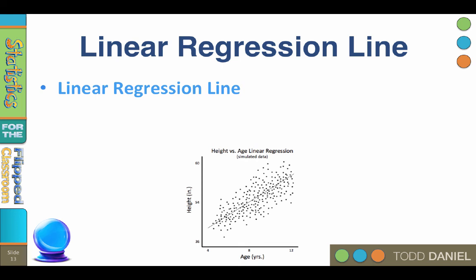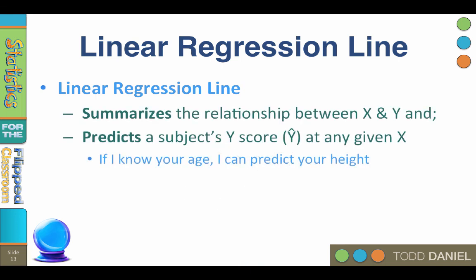It does two things. It summarizes the linear relationship between x and y, so that it can be used to predict a subject's y-score at any given x-score. That predicted score is called y-hat. So if I know your height, I can predict your weight. The value of the predicted score indicated with that carat above the y is called y-hat.